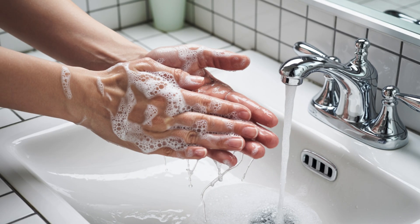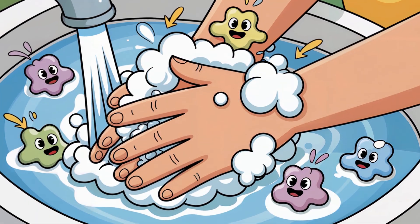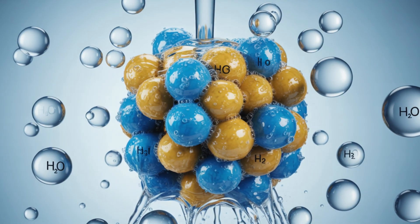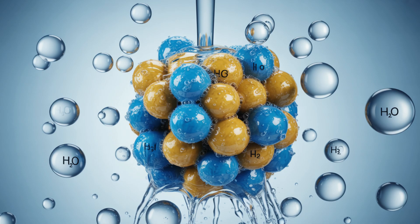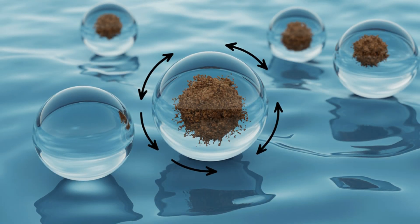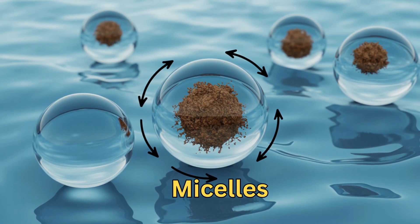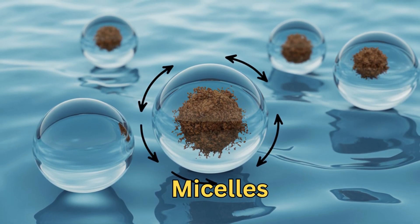When you scrub your hands, the soap's tails grab onto grease and dirt. Then the water-loving heads pull everything into the rinse. This forms tiny bubbles called micelles — little cleaning capsules that carry dirt away.